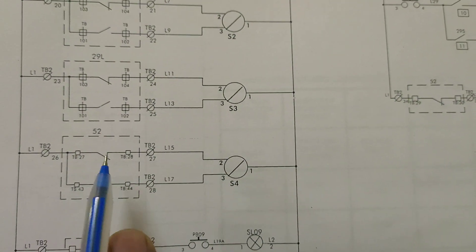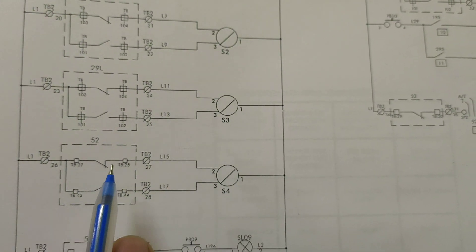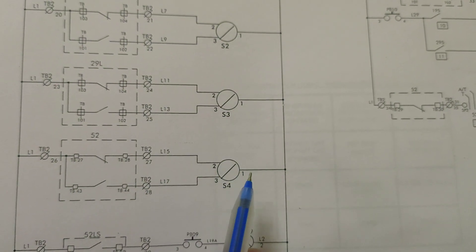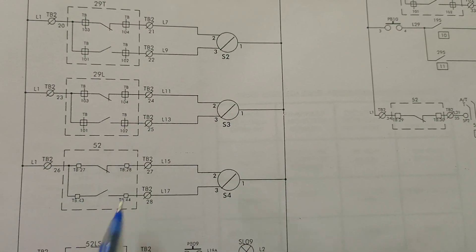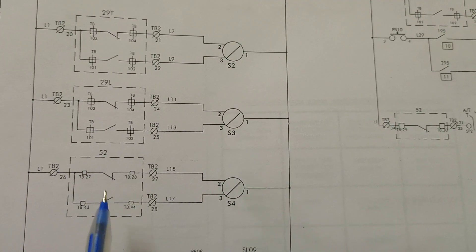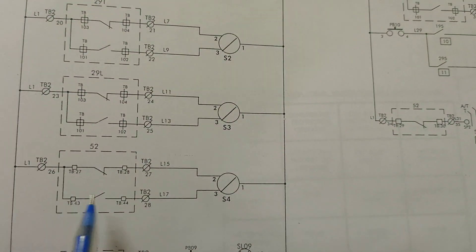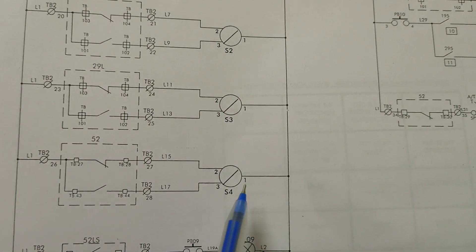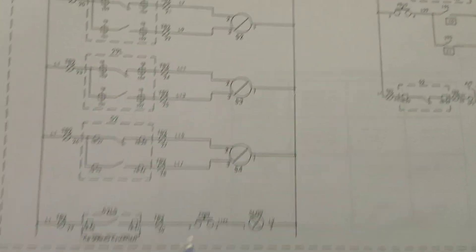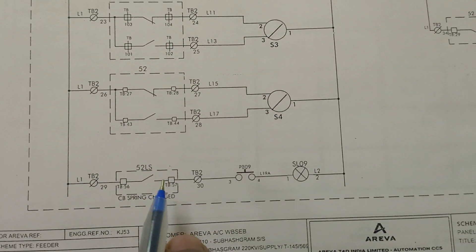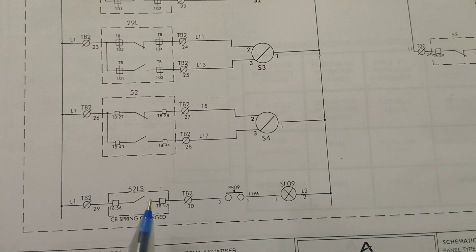52 — we know that 52 is the breaker contact. The breaker semaphore shows when the breaker is in ON or OFF conditions. When we switch on the breaker, the auxiliary contact position is changed — the NC contact becomes the NO contact — and DC passes through, and the semaphore operates and goes to the ON position. We can confirm that the breaker has been closed successfully.